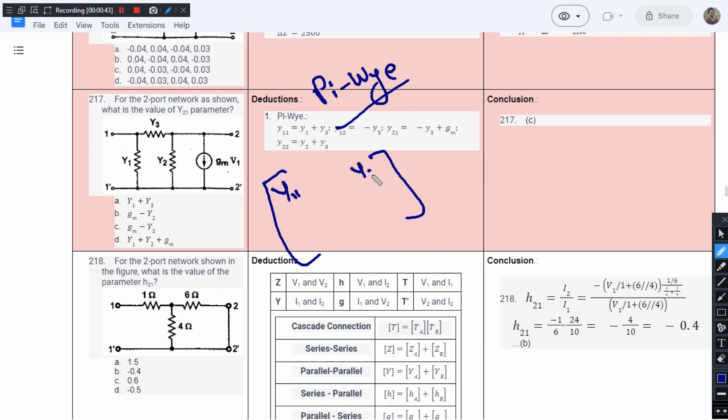The elements are Y11, Y12, Y21 and Y22. Here Y11 is the sum of all elements connected to node 1. Say this is node 1 and this is node 2. At node 1, we have Y1 and Y3, so element Y11 is Y1 plus Y3. Y22 is the sum of elements connected to node 2. Here we have Y3 and Y2, so Y2 plus Y3.